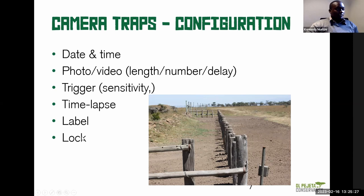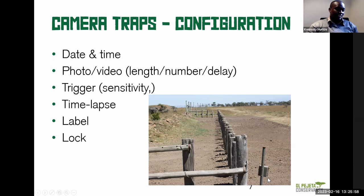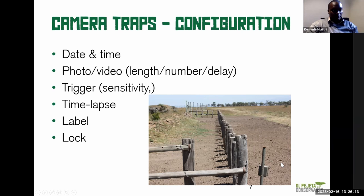Something to note about our setup: at Olpejeta, we deploy our camera traps in metallic cages, as you can see in the image. The reason is to protect the camera from animal damage — for example, hyenas are quite curious and can try to chew on the camera. So we use these metal cages and lock them with a padlock to keep the camera safe and prevent animals from damaging it.